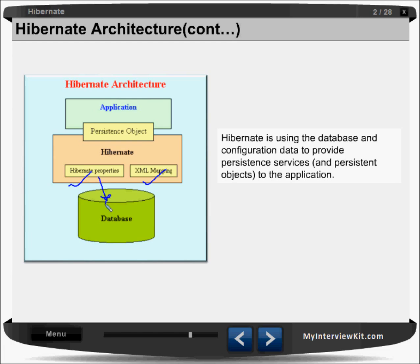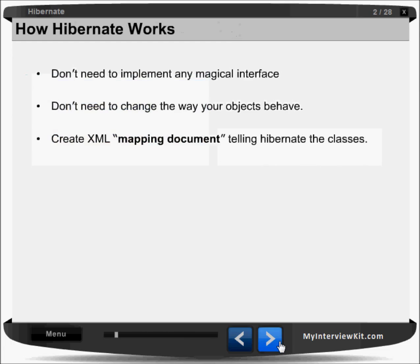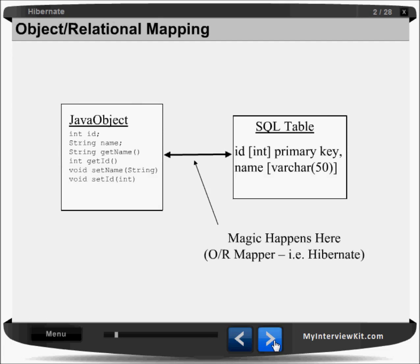How Hibernate works: you do not need to implement any magical interface — it's not like that. You do not need to change the way your objects work; you keep using them like you work with normal Java — create object, call methods. It creates an XML mapping document telling Hibernate the classes. So the magic is here only — this file will tell everything to Hibernate: what kind of table I want, what kind of database I have, and what kind of database server connectivity I want.